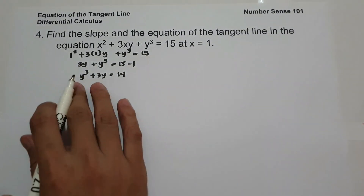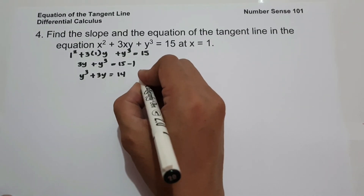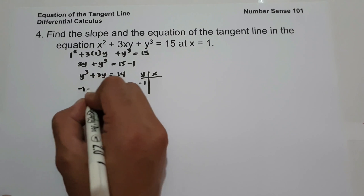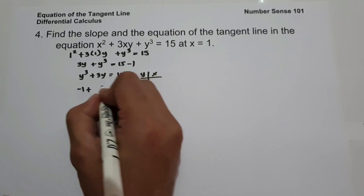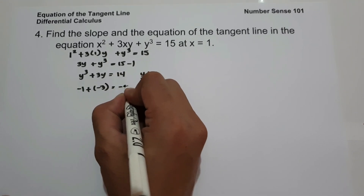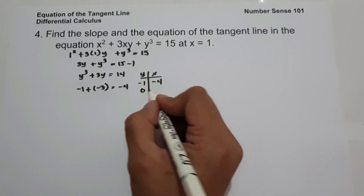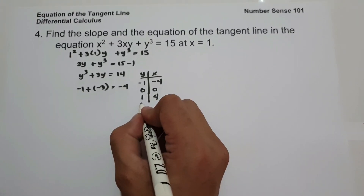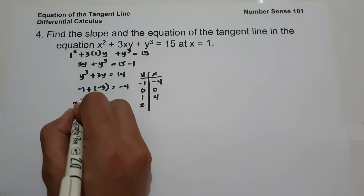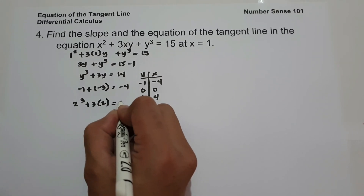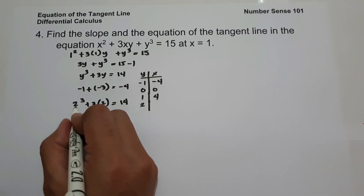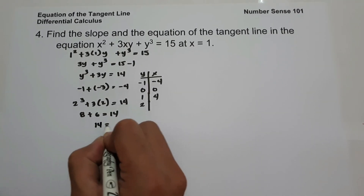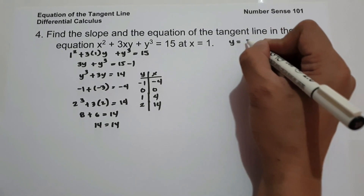To find the value of y, we test values. If y is negative 1, then negative 1 cubed plus 3 times negative 1 is negative 1 minus 3, which is negative 4 — not 14. Testing y equals 2: 2 cubed plus 3 times 2 equals 8 plus 6, which equals 14. So the value of y is 2.